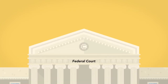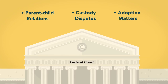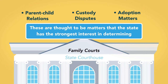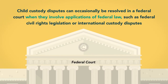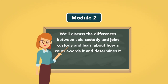Federal courts rarely have jurisdiction over child custody cases, even where there might otherwise be federal court jurisdiction based on diversity of citizenship. Where the substance of the action concerns parent-child relations, custody disputes, or adoption matters, federal courts defer to state courts, as these are matters the state has the strongest interest in determining. Child custody disputes can occasionally be resolved in federal court where they involve federal civil rights legislation or international custody disputes. In our next module, we'll discuss the differences between sole custody and joint custody.